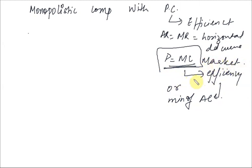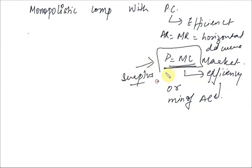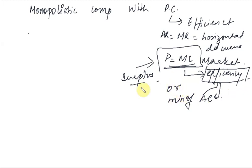When the market is efficient, surplus is maximized — surplus is maximized where P equals MC. When we talk about individual efficiency, that occurs at the minimum of AC.